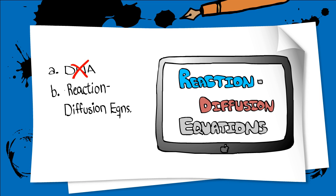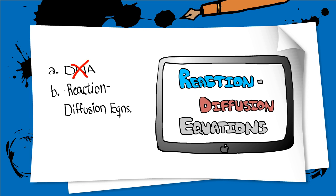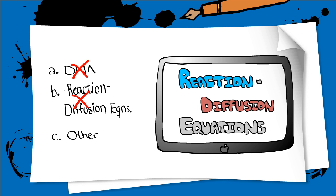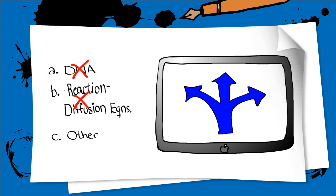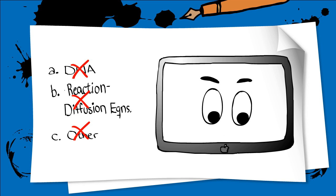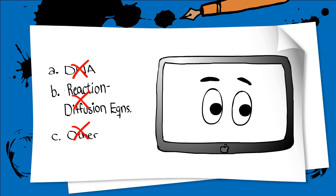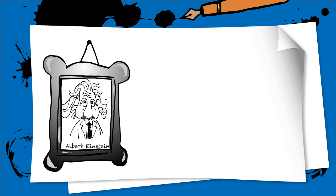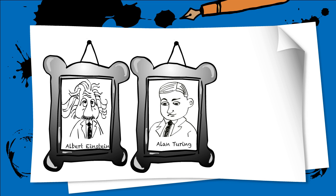Even though this is one of the primary hypotheses for pattern formation, we must not confuse it for the absolute answer. There are other possible mechanisms for pattern formation that exist, but we will not focus on them here. For now, let's focus on the pattern formation theory that was developed collaboratively by experimentalists and theorists, and includes people like Einstein, Alan Turing, and Francis Crick.